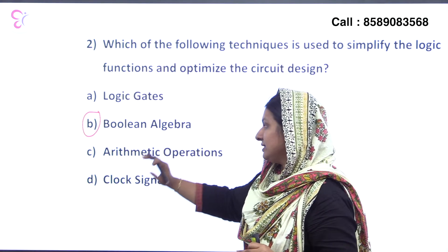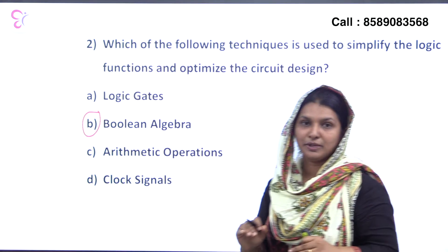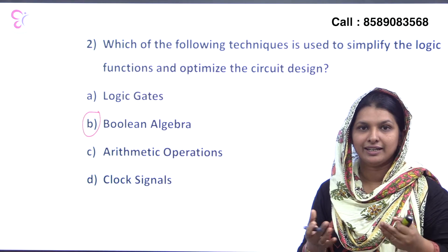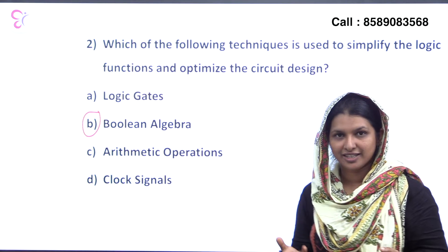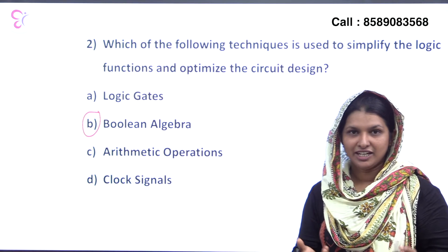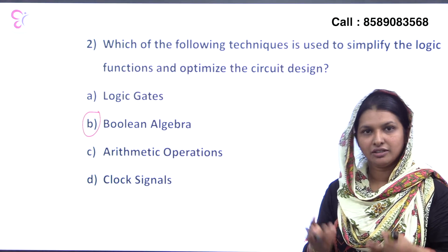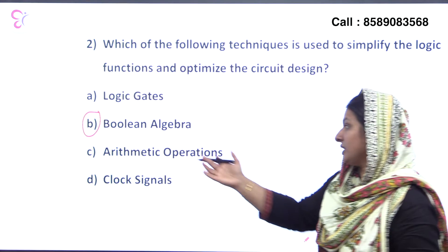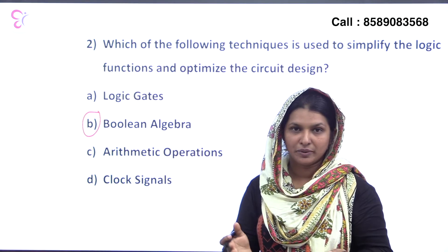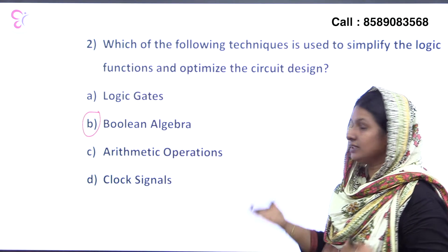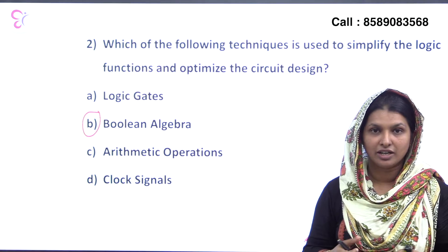Option C, Arithmetic Operations, refers to mathematical operations such as addition, subtraction, multiplication, and division. These are standard arithmetic operations and are not used to simplify logic functions or optimize circuit design in the way Boolean Algebra is.